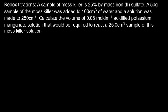A sample of moss killer is 25% by mass iron(II) sulfate. A 50 gram sample of the moss killer was added to 100 cm³ of water and a solution was made to 250 cm³. Calculate the volume of 0.08 mol per decimetre cubed acidified potassium manganate solution that would be required to react a 25 cm³ sample of this moss killer solution.